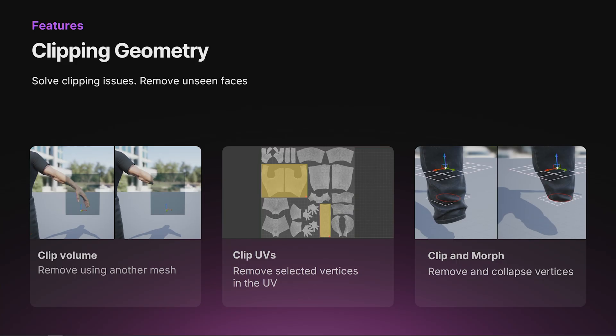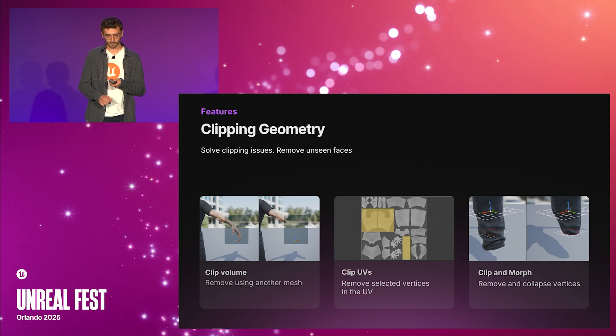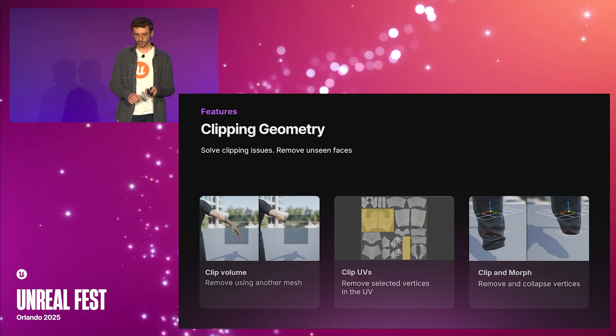In addition to switching, Mutable also allows you to perform mesh operations such as clipping geometry. For example, you can clip the geometry using simple clip volumes, clip vertices by selecting them on the UV layout, or clip and morph the remaining geometry. This is especially useful when you want to fit a pants leg inside a boot.